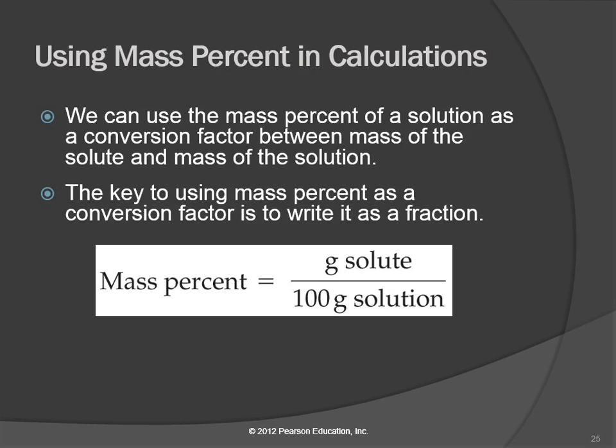So percent. Cent refers to hundreds, right? A century is a hundred years. There's a hundred cents in a dollar. Centi is one one-hundredth. So percent means per hundred. So grams of solute per hundred grams of solution. That's what percent means.